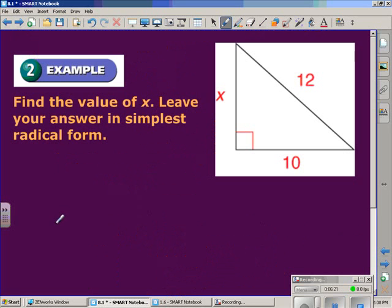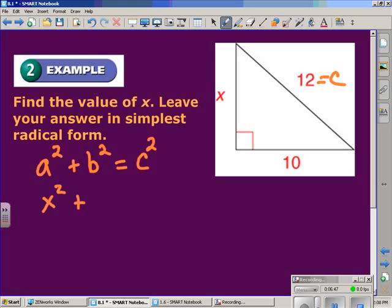In example two, we are being asked to find the value of x and to leave the answer in simplest radical form. What you must determine is, are you solving for the length of a leg or the length of the hypotenuse? I start off most of these problems by writing down the Pythagorean theorem. a squared plus b squared is equal to c squared. We can see that 12 is going to be the hypotenuse because it is opposite of the 90 degree angle in the right triangle. Therefore, I will substitute x in for a, 10 in for b, and 12 in for c to give me x squared plus 10 squared is equal to 12 squared.